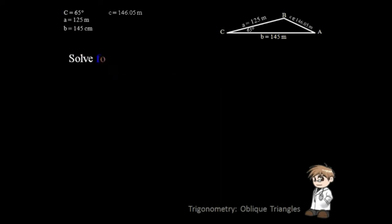Now let's solve angle A. To solve angle A, we can use the Law of Sine or the Law of Cosine. Since you already have an idea of solving using the Law of Sine, we will use the Law of Cosine to solve this. To get angle A, we have to use this equation. Let's proceed solving it.